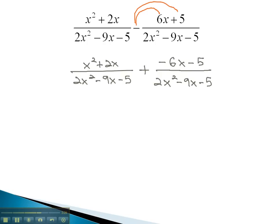Now that we have a common denominator, we can combine our numerators. x squared has no like term, but 2x minus 6x is negative 4x, and finally, the minus 5 has no like term over our denominator, 2x squared minus 9x minus 5.